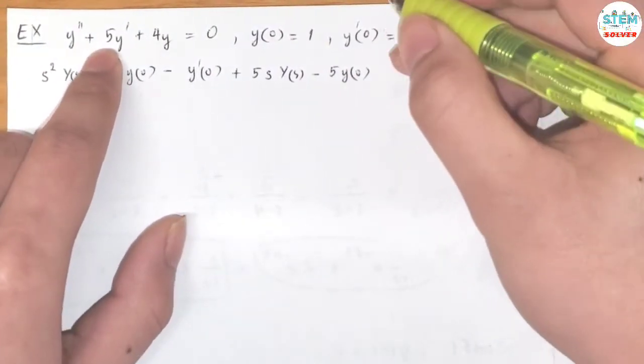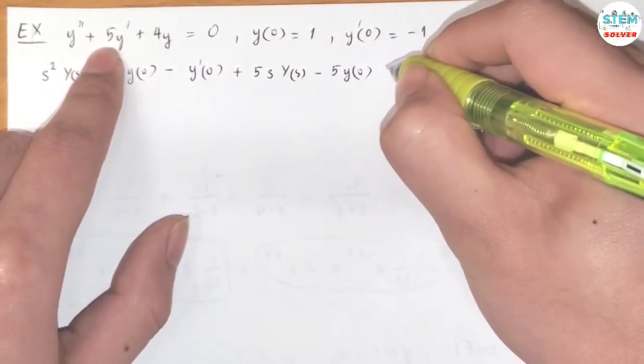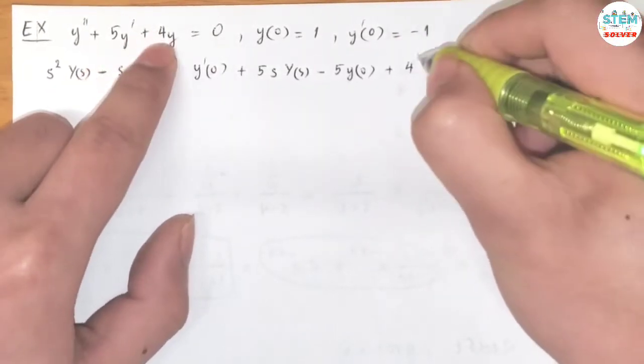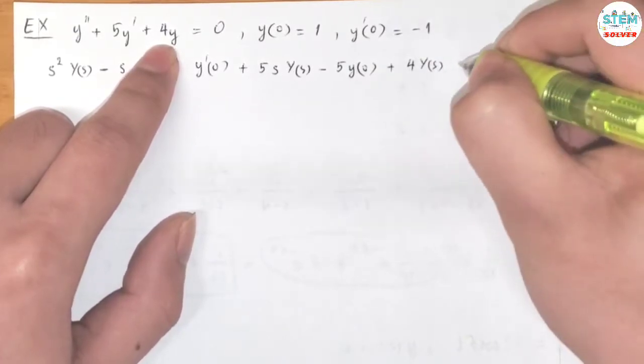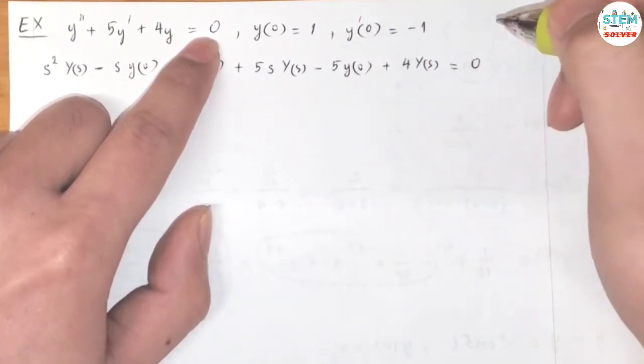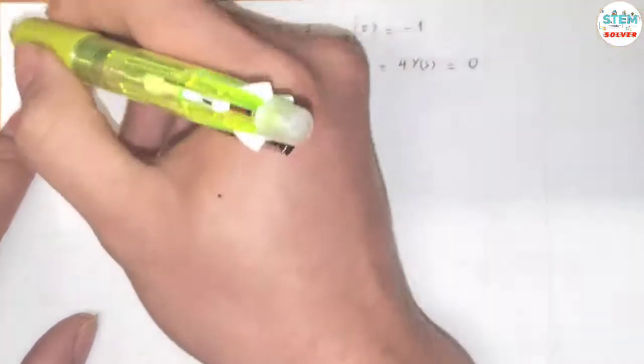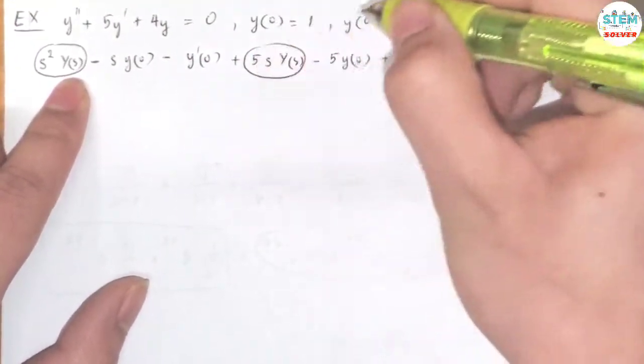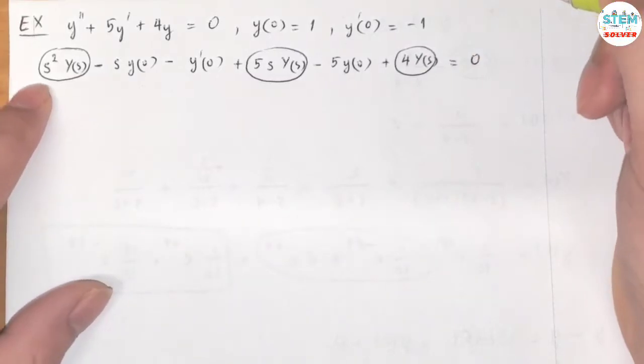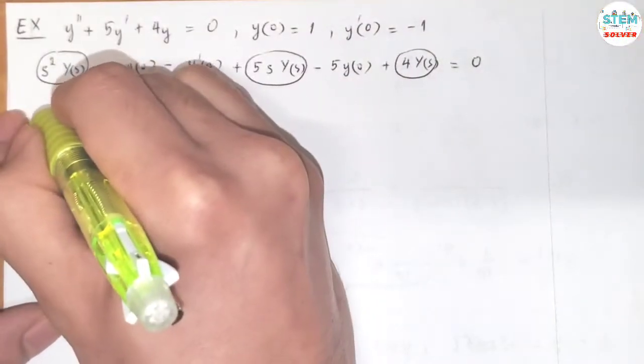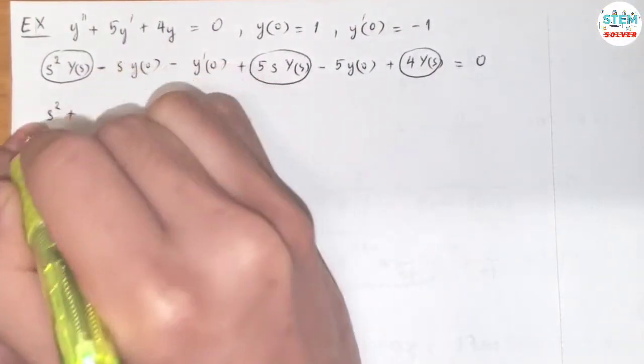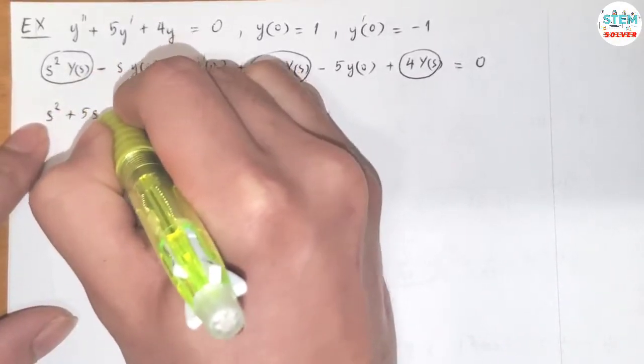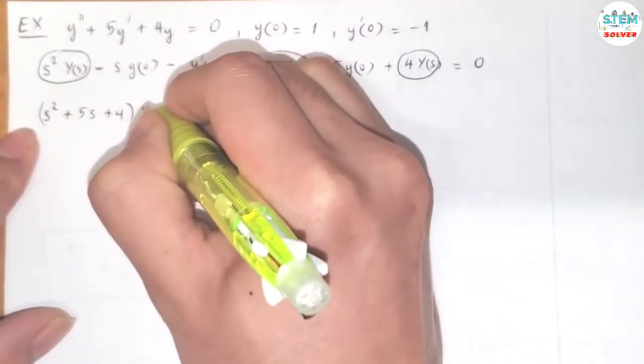Plus 4 times y(0), because you don't have any derivative here, and the Laplace transform of 0 is equal to 0. Now take a look at capital Y(s). I'm going to find capital Y(s), then in parentheses I have s² + 5s + 4 times capital Y(s).